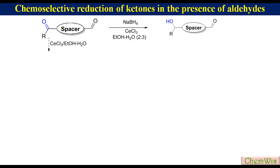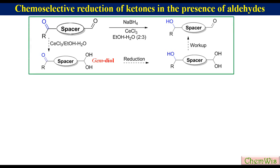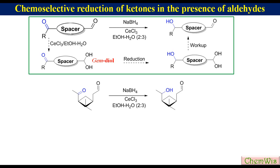only the keto group will selectively be reduced to produce this hydroxy aldehyde. The reason for the selective reduction of ketone is that aldehyde, being more electrophilic in nature, forms a hydrate — that is, a gem-diol — in the given reaction conditions, leaving only the ketone available for reduction. After reduction, this triol is formed, which after workup produces the product with the intact aldehyde. For example, if we allow this cyclobutane derivative with both the aldehyde and keto group to react with NaBH4 in the presence of cerium chloride in ethanol and water, it gives the product with reduced ketone and intact aldehyde.